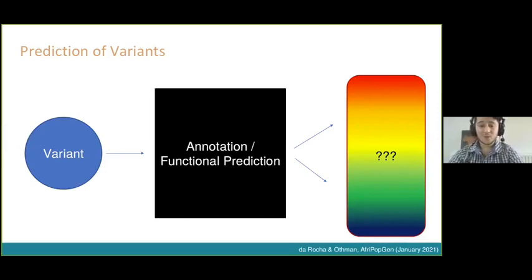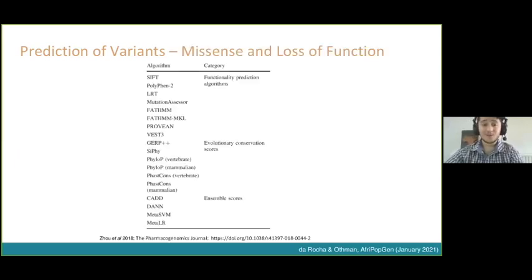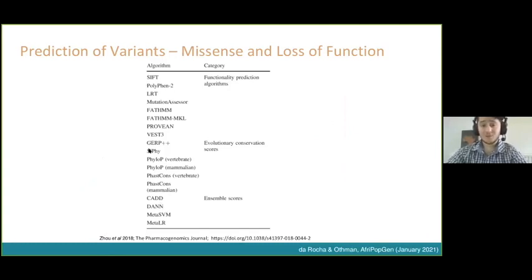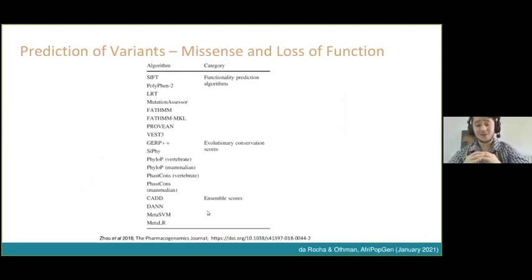Every tool has its own parameters, and maybe every tool isn't best for the data you're working with. There was amazing work done by Zu et al. characterizing the kinds of algorithms available — whether they're used for functional prediction, evolutionary conservation, or combining those metrics to make estimations about your variants.